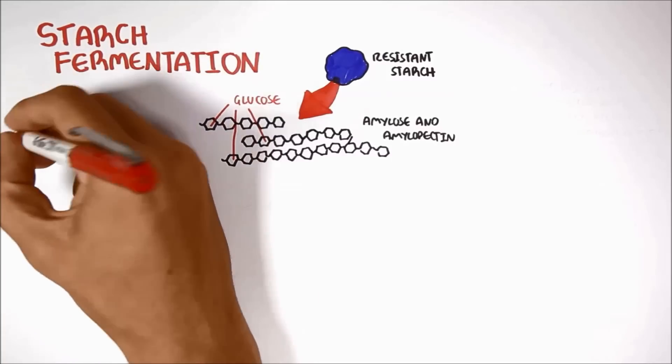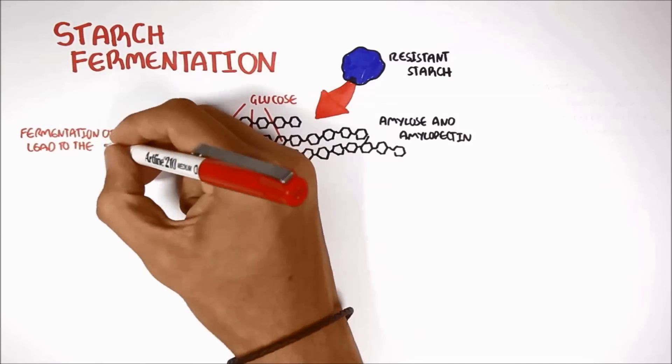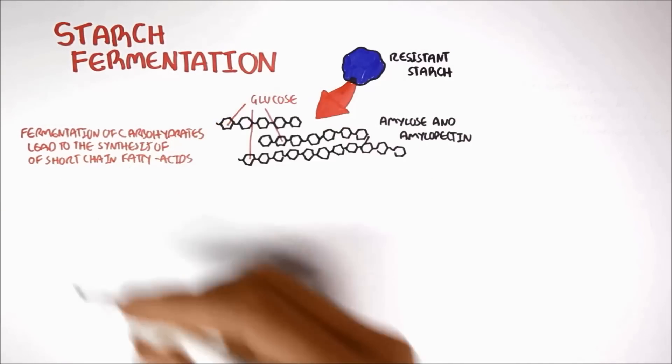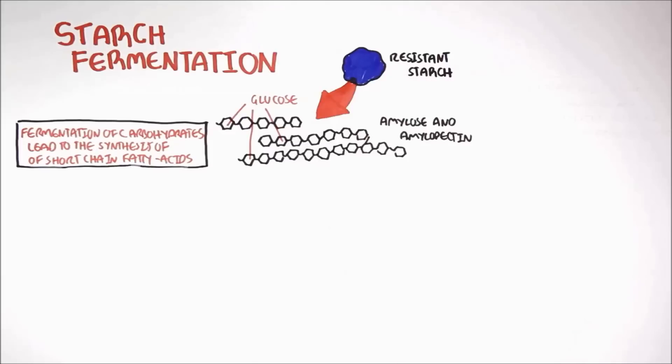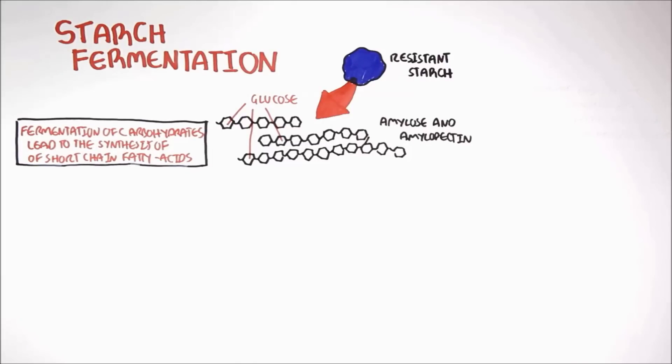Fermentation of carbohydrates, such as resistant starch, lead to the production of short-chain fatty acids. Let us look at a simple pathway of how these short-chain fatty acids are produced.